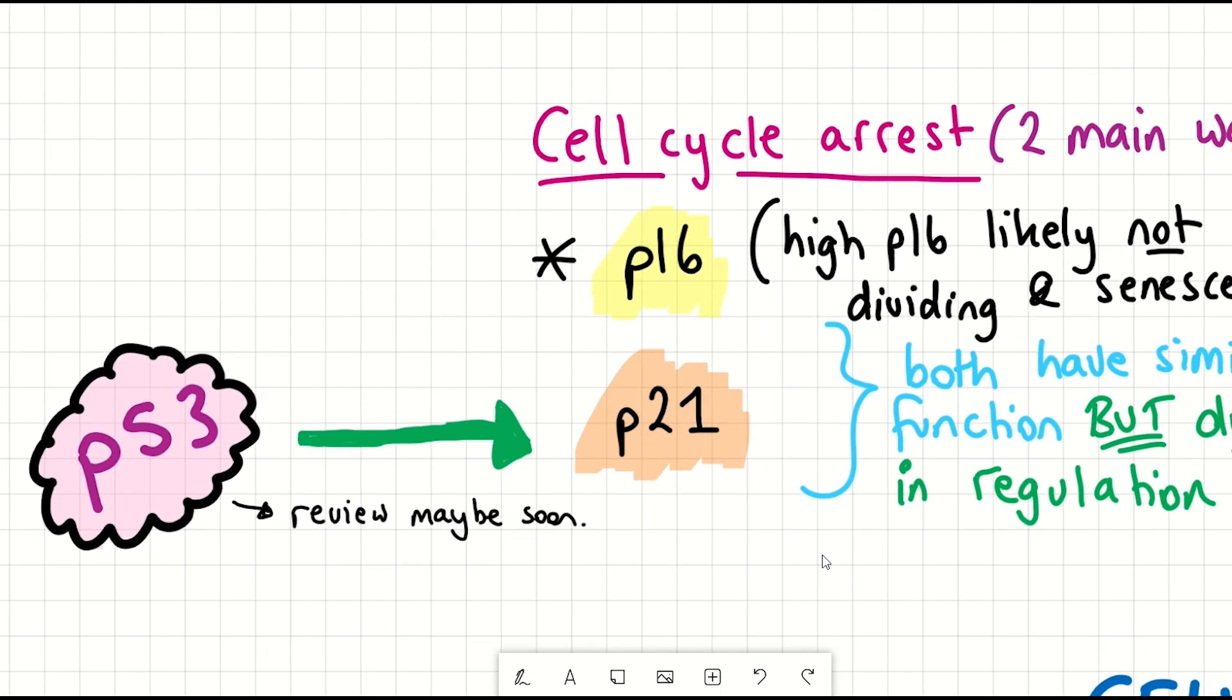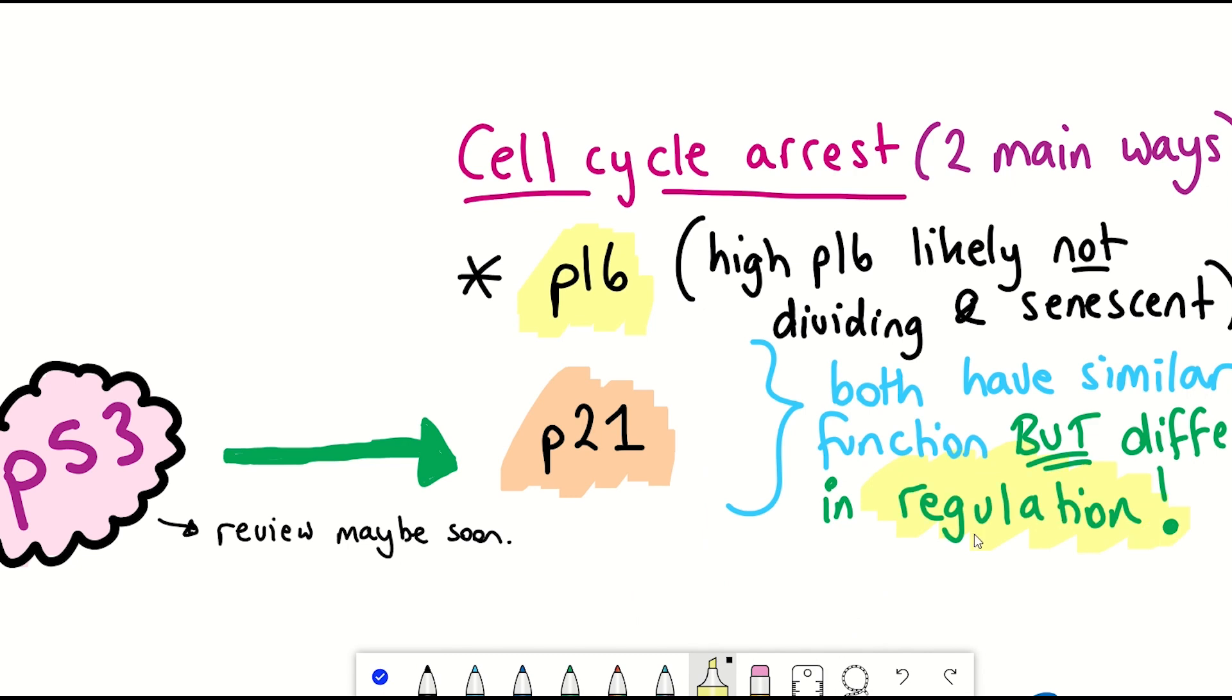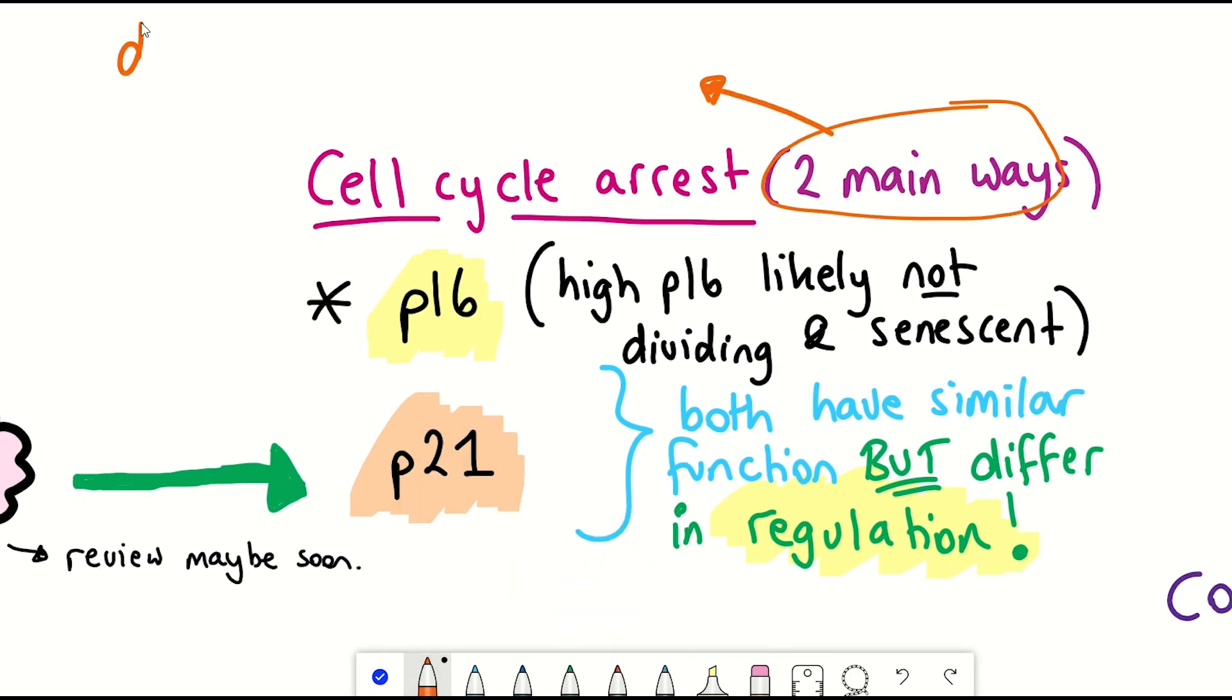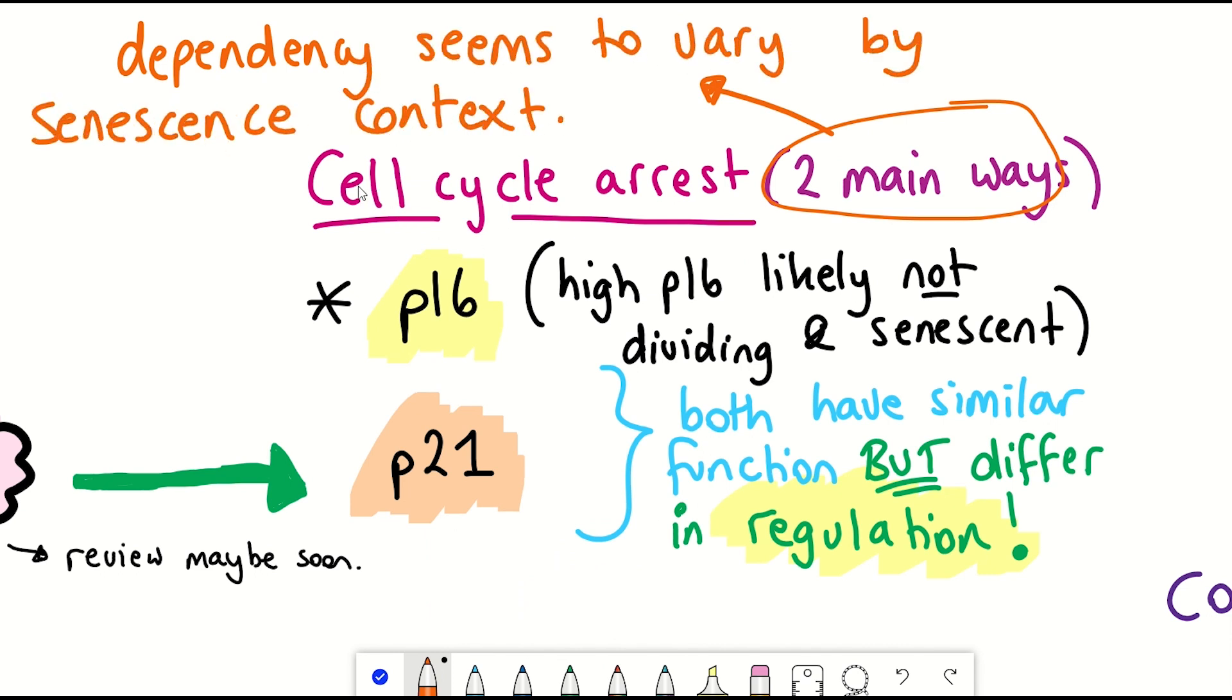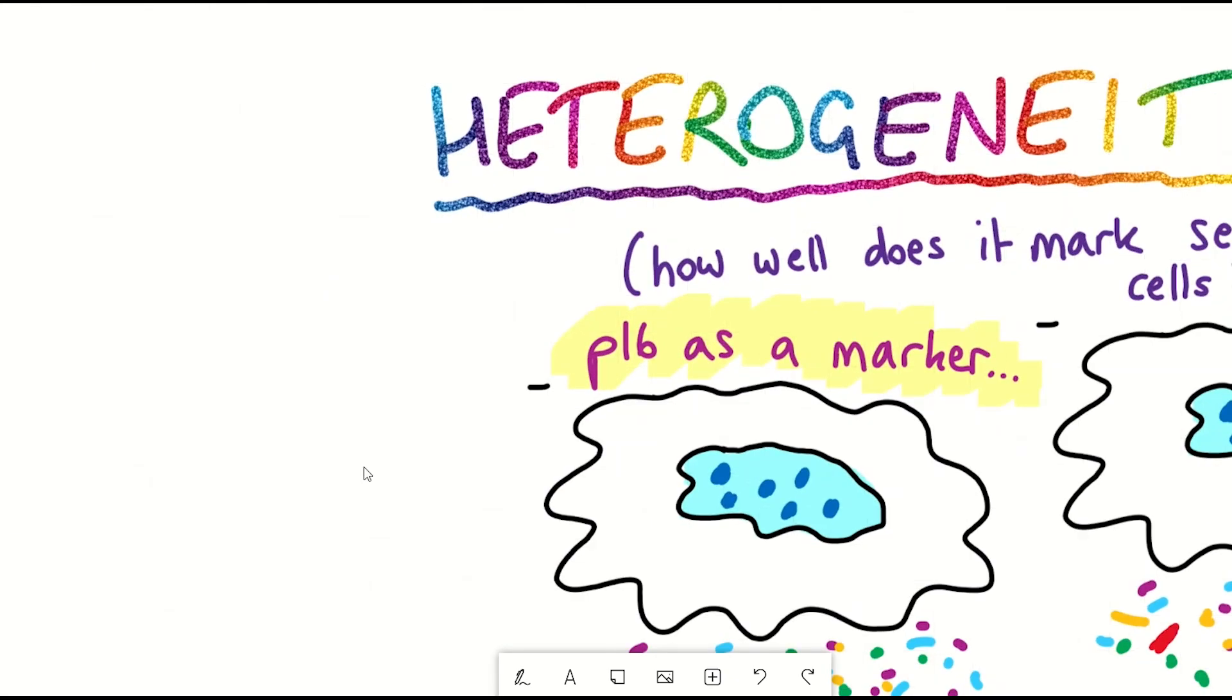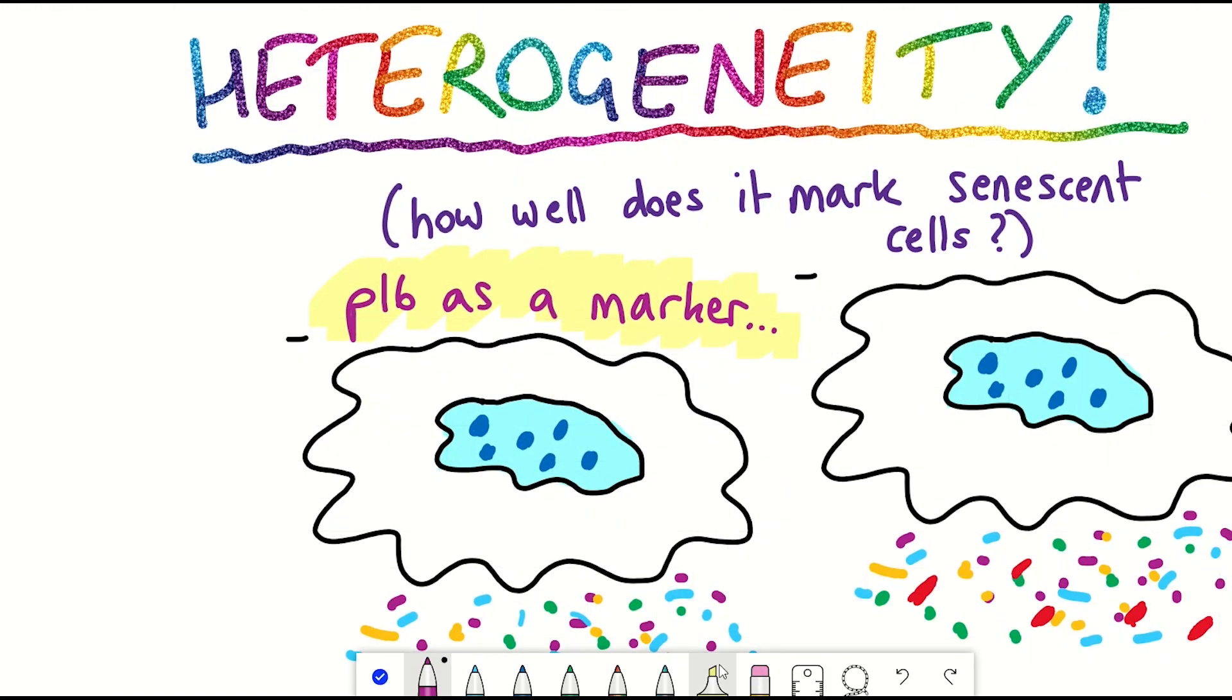But compared to P16, as I just said, they're regulated in different ways. So the dependency on each of these pathways also seems to vary depending on the mode of induction and the cellular context in terms of senescence. So it's a little bit complicated. But the important question is, well, why P21? Is it going to be a better reporter of senescent cells than P16? As not all high P16 cells are senescent, and not all senescent cells have high levels of P16. So can the same be said of P21?